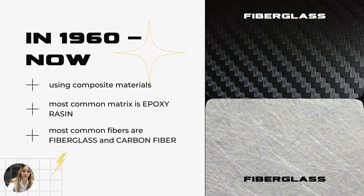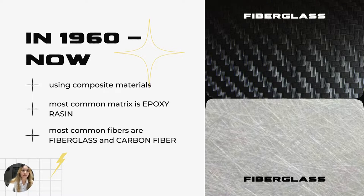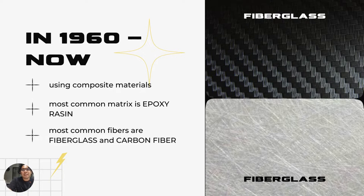As shown in the pictures on the right: first, fiberglass has good ability to resist tension, compression, and impact — it is easy to use and inexpensive. Second, carbon fiber has greater ability to resist tension and compression than fiberglass, but less ability to resist impact. Carbon fiber can reduce weight and has less susceptibility to corrosion.